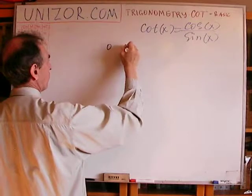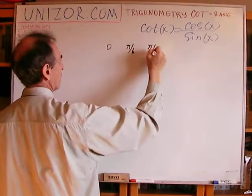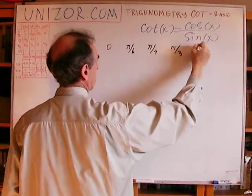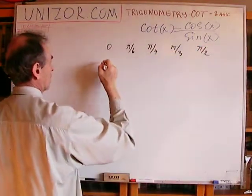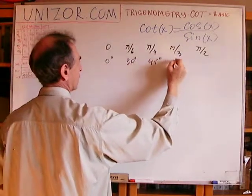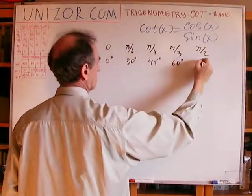So, let me just draw a little table, which has all the major angles: 0, pi over 6, pi over 4, pi over 3, pi over 2, which is 0 degree, 30, 45, 60, and 90.